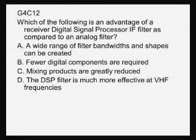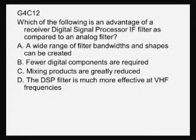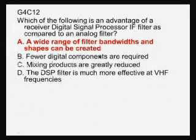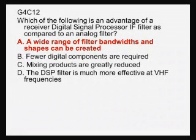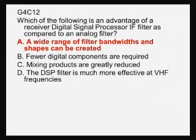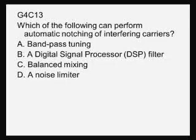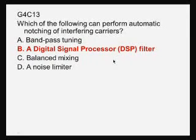Which of the following is an advantage of a receiver digital signal processor IF filter compared to an analog filter? Since you're using digital processing, you can create a wide range of filter bandwidths and shapes — basically you're just changing the math in the filter by adjusting filter settings, which changes the filter characteristics. A digital signal processor filter can also perform automatic notching of interfering carriers.